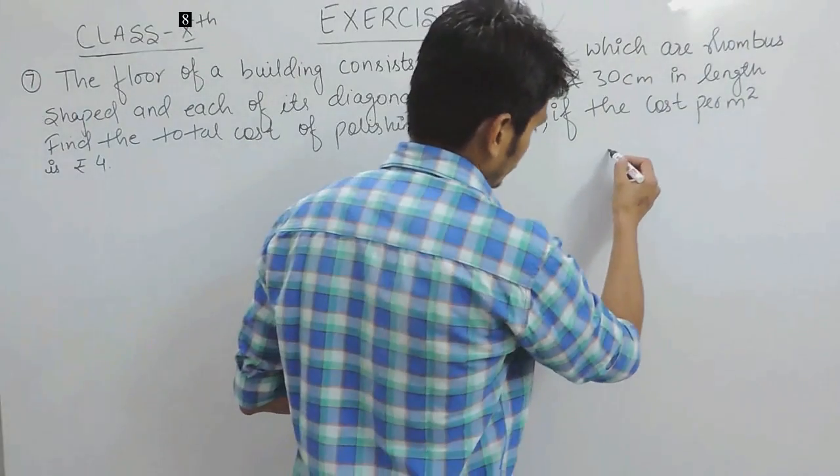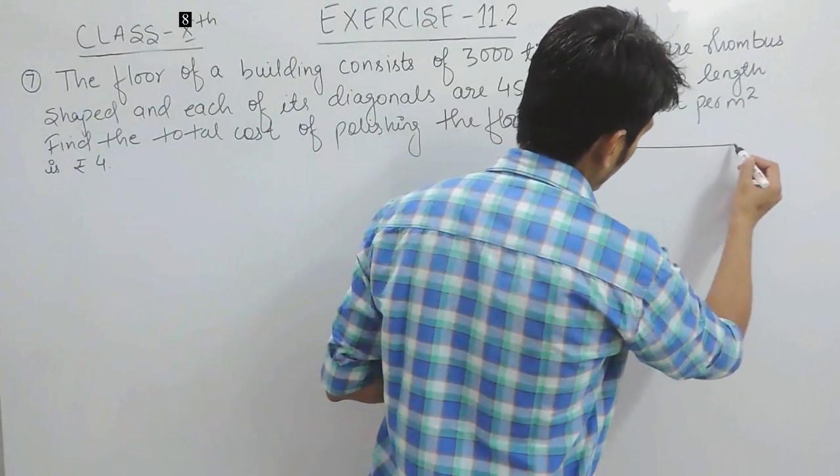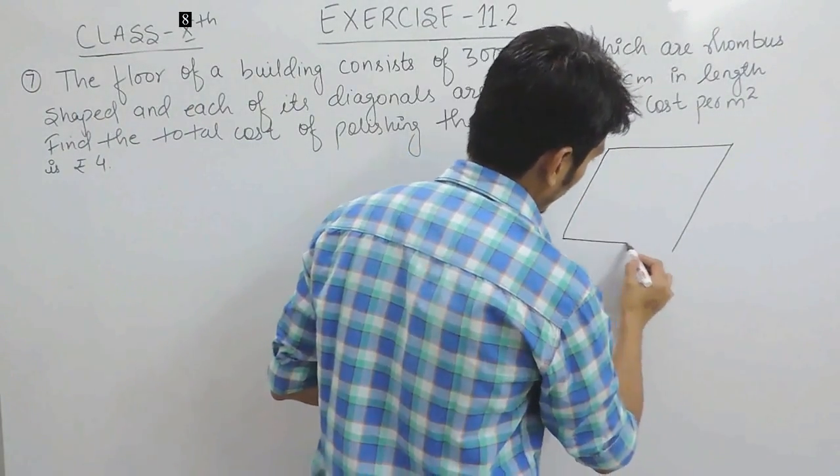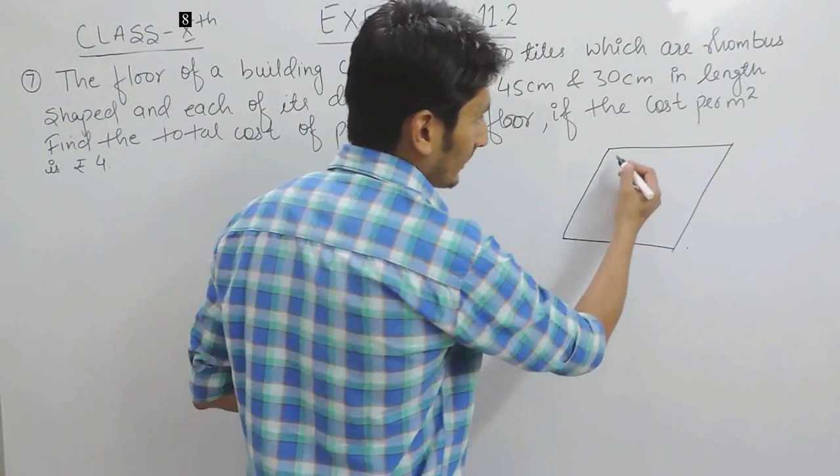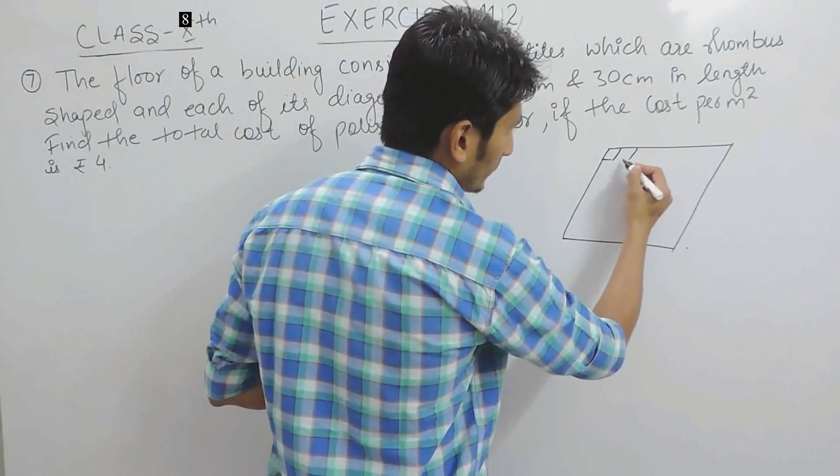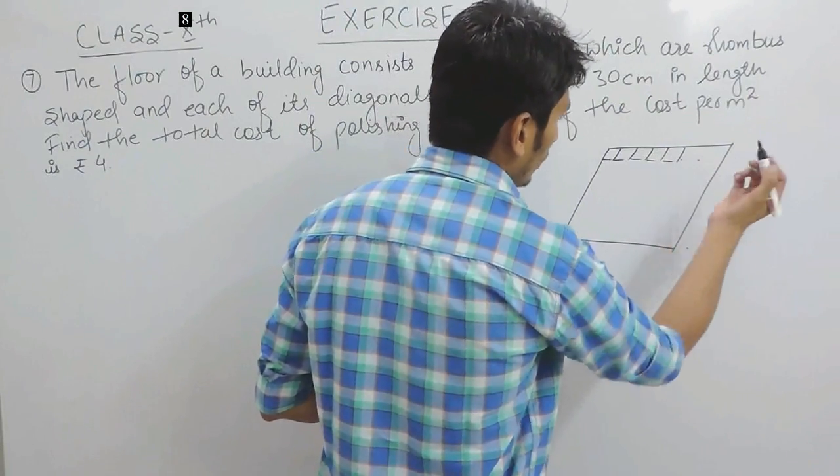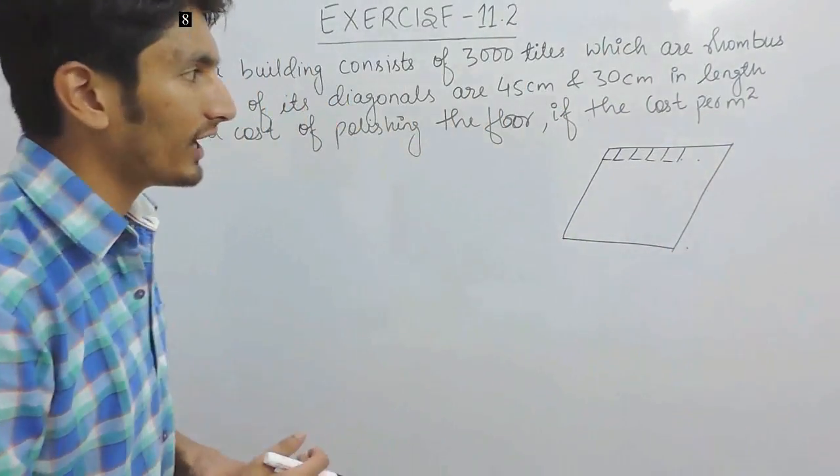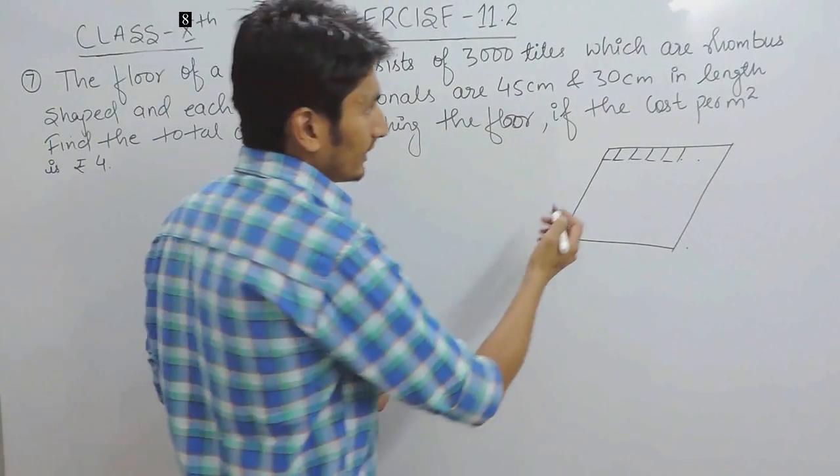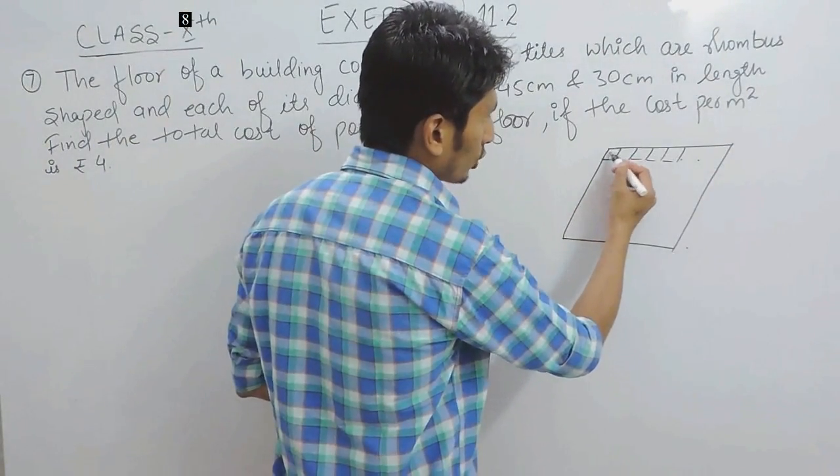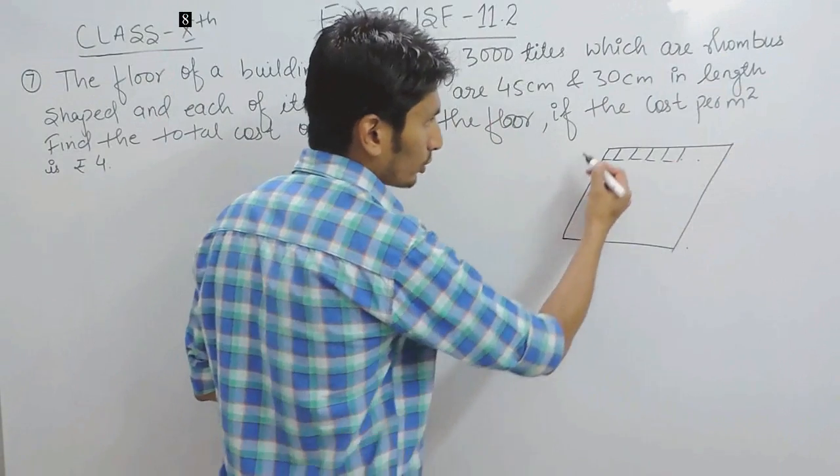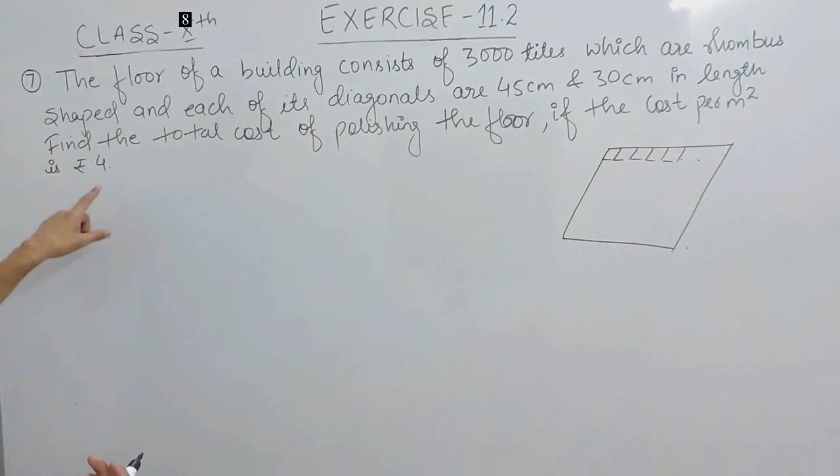This means, if I have a room which is rhombus shaped and I have covered this room with tiles which are also in rhombus shape, you have to find the cost of polishing this whole room if the cost per meter square is Rs. 4.